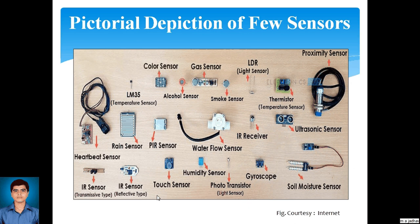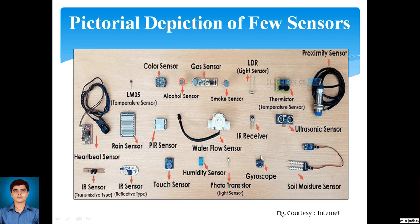Here is a pictorial depiction of a few sensors — you can see the different small circuits available for sensing different quantities. We can see a thermistor for temperature sensing, an LDR (light dependent resistor) as a light sensor, an IR receiver as another light sensor, a smoke sensor, a gas sensor for detecting gases like LPG, a color sensor, an alcohol sensor, and a rain sensor. These sensors can be used in various applications such as leak detection of gases.